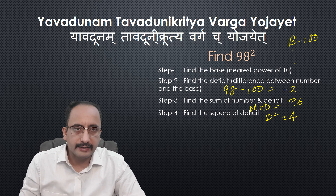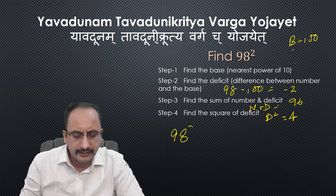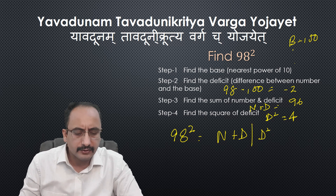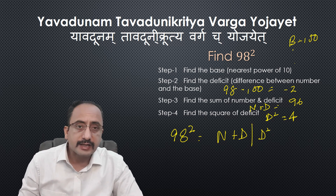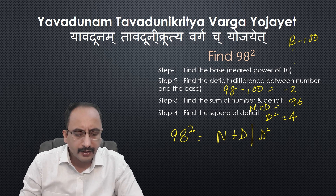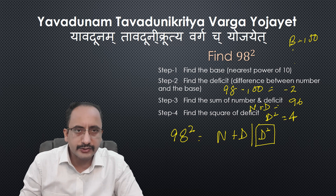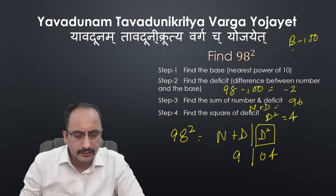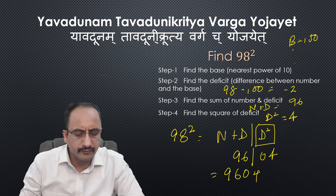Finally, the square of 98 is written in two parts. First part is N plus D = 96. Second part is D² — since 100 has two zeros, the second part must have two digits. D² is 4, so I write 04. The square of 98 is 9604.